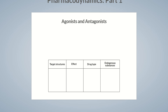In general, drugs don't initiate new metabolic processes in the body, but alter biochemical processes. To do so, they interact with specific target structures in the body — for example, receptors and enzymes. These interactions can either enhance or inhibit downstream biochemical processes.